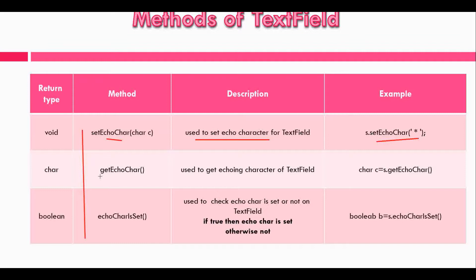The next method is getEchoChar(), used to get the echoing character of the TextField. The result is stored in a character object, so the return type is character. The last method is echoCharIsSet(), with a boolean return type, used to check whether echo char is set or not on the TextField, and can be used like this.